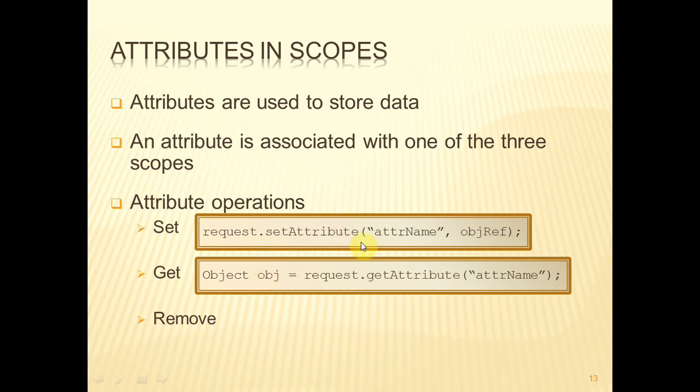So it might be that we have set, let's say, a string as an attribute called attrName, but when getAttribute works, it will look for attrName, find it, and return a reference to it as a reference of type Object, not String. It's still a String object, but the reference to it is a reference of type Object. And therefore, typically, what we would have to do is then to typecast that reference back into a String.